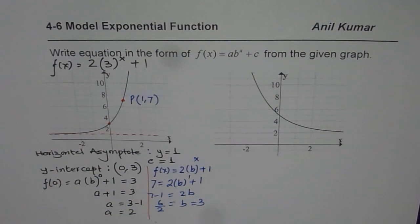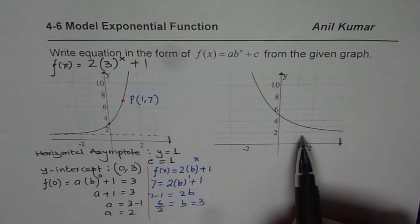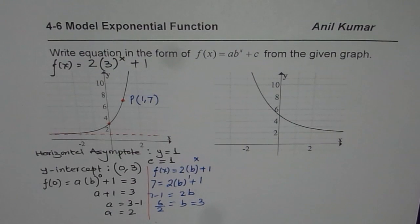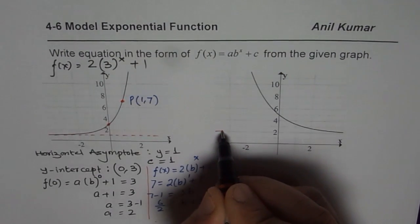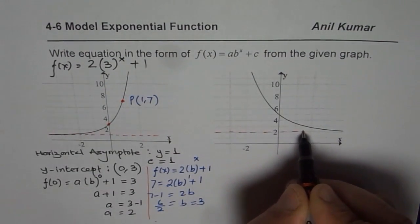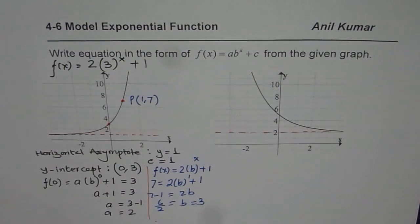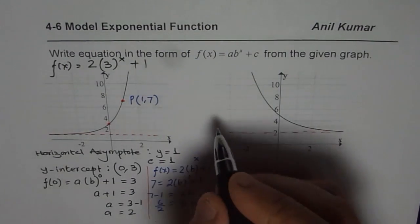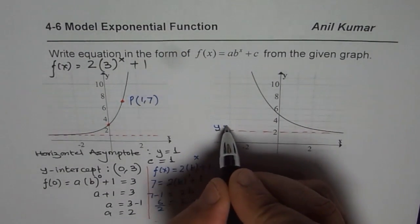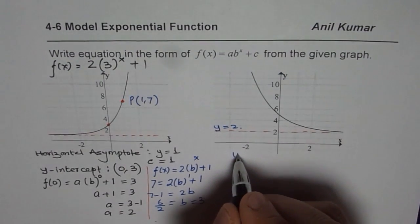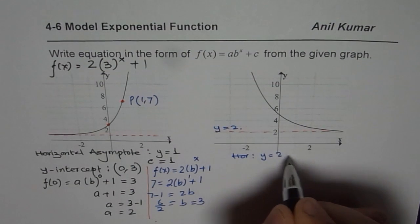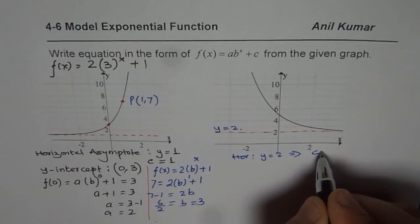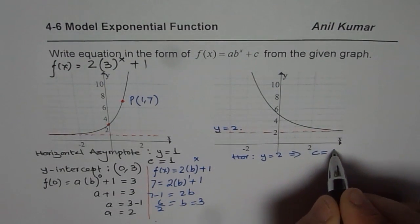Now adopt the same method and write down the equation of the second function. Let's begin by checking the horizontal asymptote. The horizontal asymptote is y = 2, which implies that c = 2.